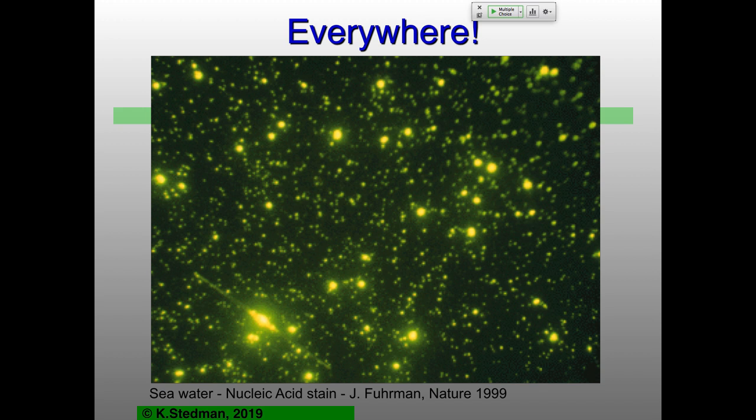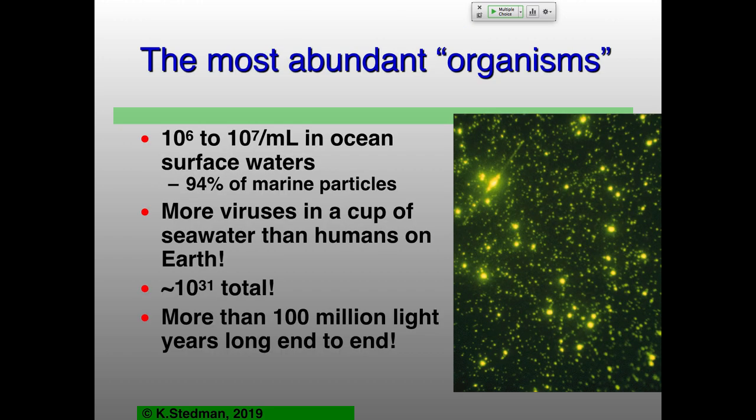Viruses are absolutely everywhere — incredibly ubiquitous. This is a sample of seawater, which could also just as easily be a sample of soil or the air in this room if you concentrated enough. Stained with a nucleic acid binding stain, you can see one poor little eukaryote — a diatom right here — and a few bacteria/archaea as big dots. What are the little dots? Virions. Lots and lots and lots of virions. You can actually count all these little dots in a particular sample of seawater and get to absolutely ridiculous numbers. The best numbers are from ocean surface waters: between a million and 10 million virions per milliliter.